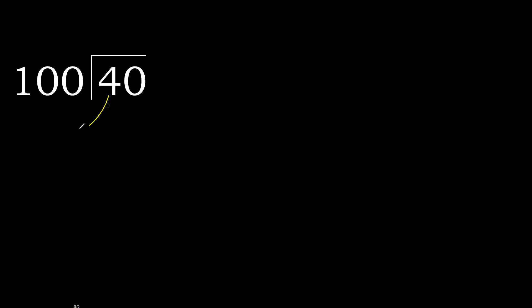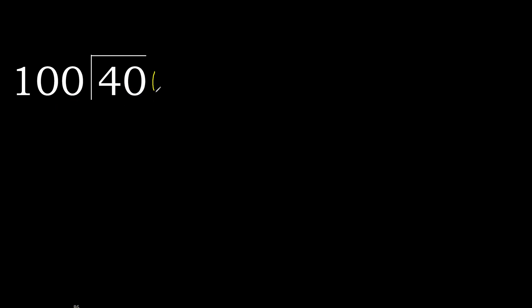40 divided by 100. 4 is less, therefore next — 40 is less. There is no number, therefore complete with 0. Always complete with 0. Here: 0 point.